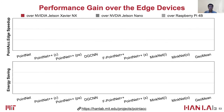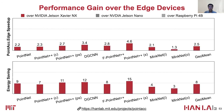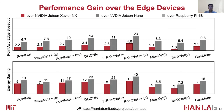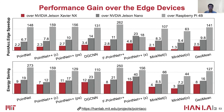Here we show the performance of the edge version of Point Tech over edge devices. Again, the x-axis shows different networks, and the y-axis shows speedup and energy savings separately. Edge Point Tech achieves 2.5x speedup and 8x energy savings over Jetson Xavier, 9.8x speedup over Jetson Nano, and 141x speedup over Raspberry Pi.